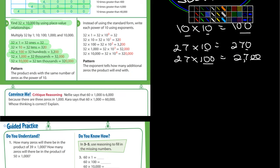Let's look at the convince me. It says Nellie says that 60 times 1,000 is 6,000 because there's three zeros in 1,000. And then Kara says that 60 times 1,000 is 60,000. Who's thinking is correct? Ms. Guerin, what do you think? Is it Nellie or Kara?